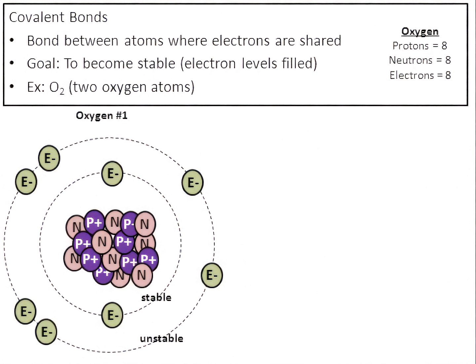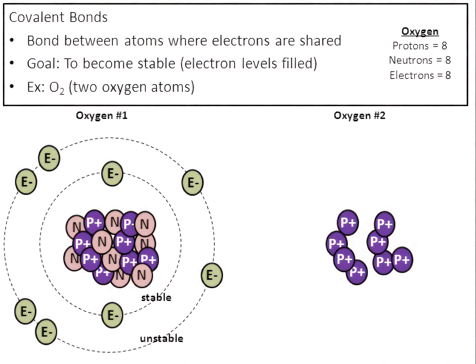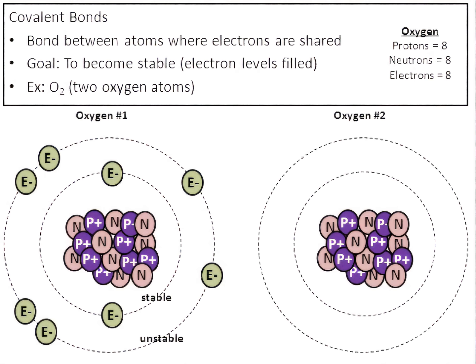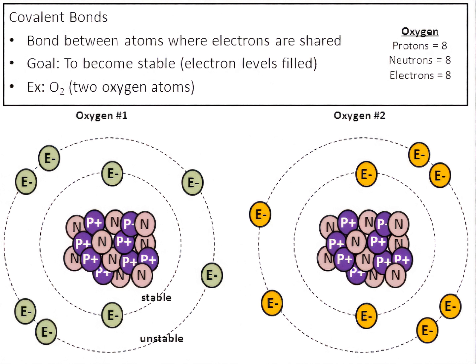The oxygen we breathe is actually made from two atoms, so we draw a second oxygen atom. Like the first, it has eight protons and eight neutrons in the nucleus, and eight total electrons. Two electrons in level number one, and the remaining six in level number two. The first level is stable and filled. The second level is unstable — it doesn't have eight electrons, it only has six.